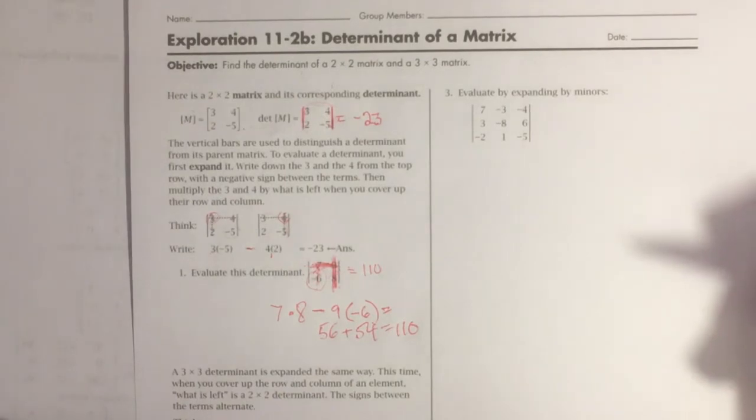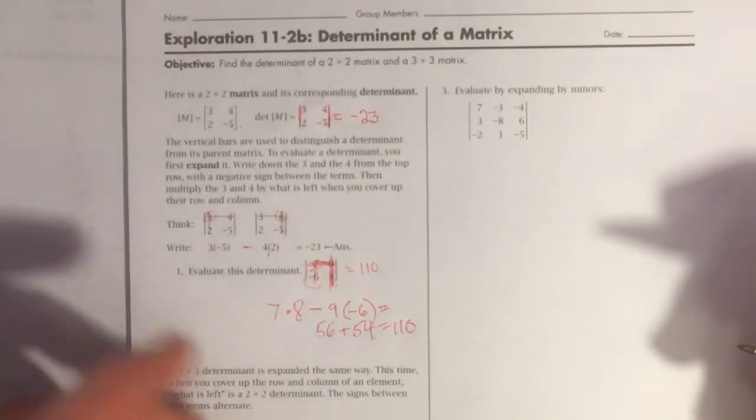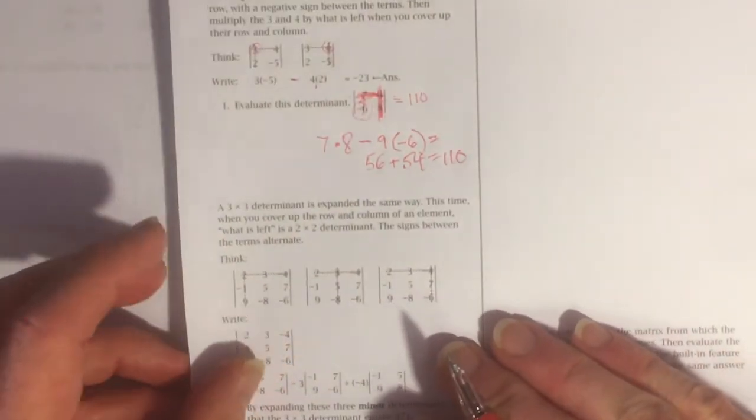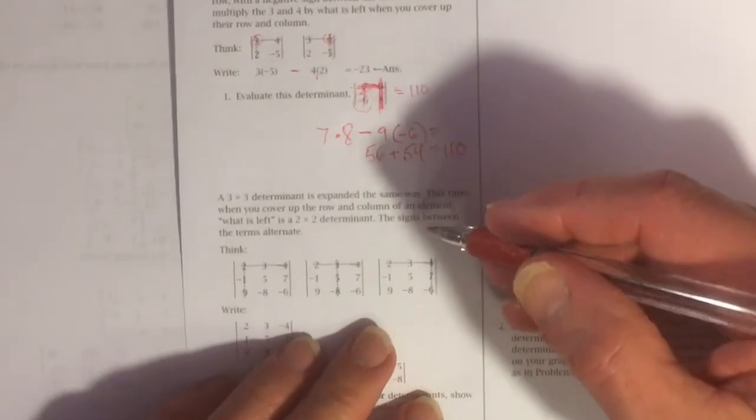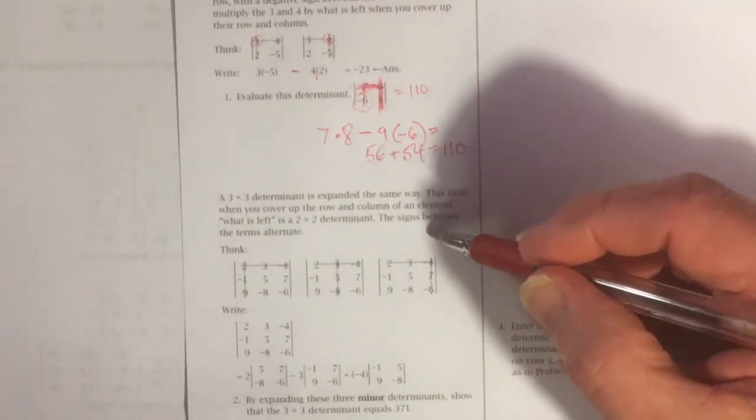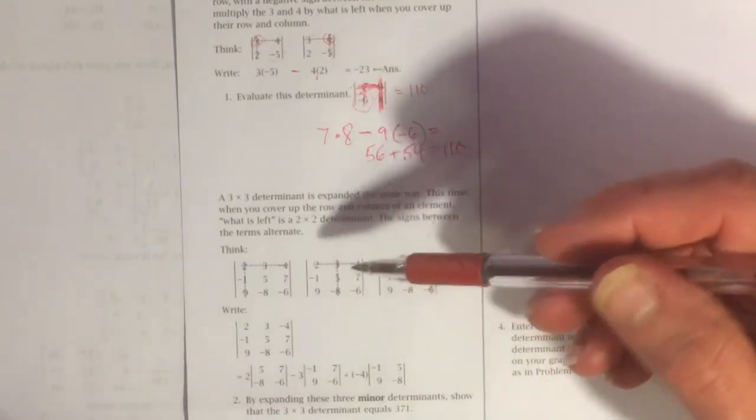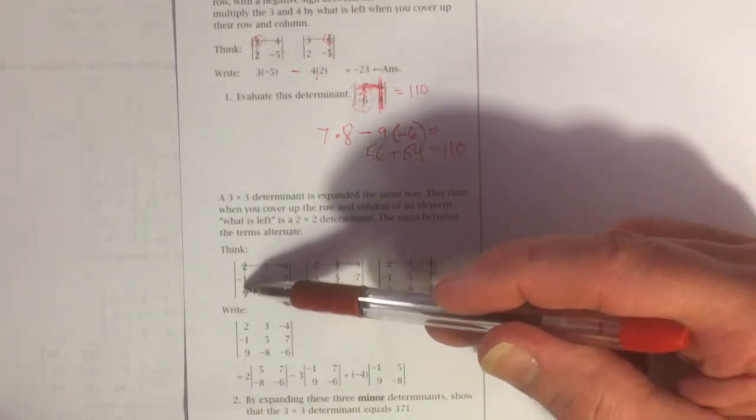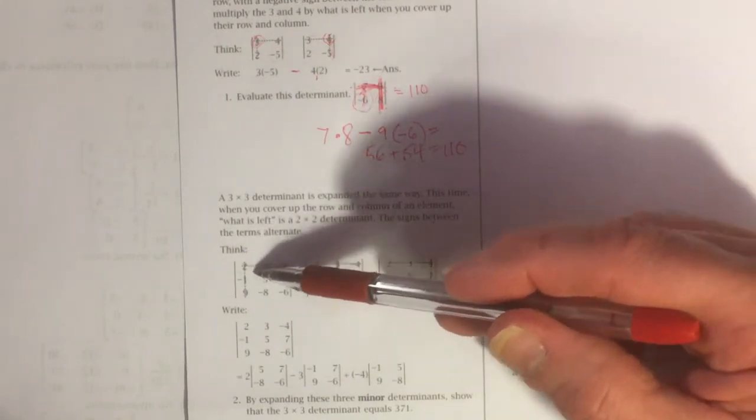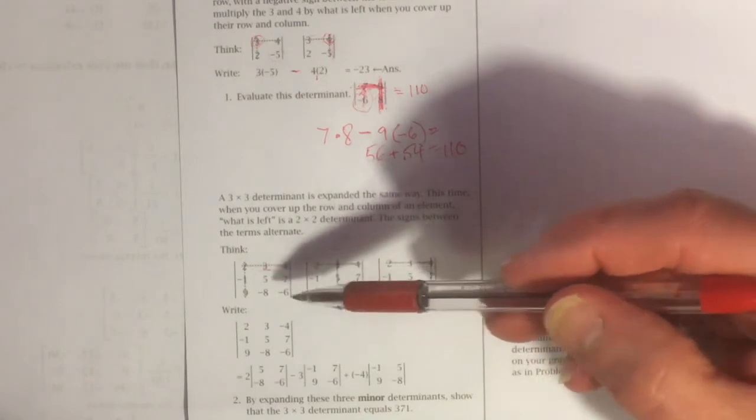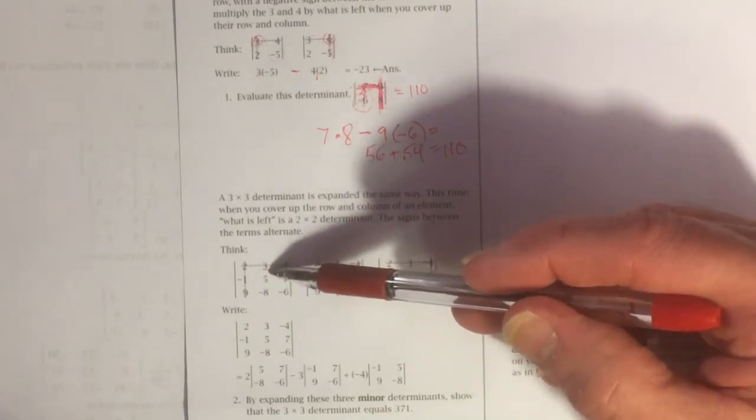Okay. Now, when it gets a little bit bigger, the method that they talk about here is crossing out the first row and crossing out the first column, taking what's left and finding the determinant of this part that's left.